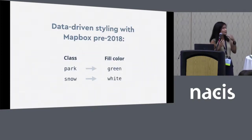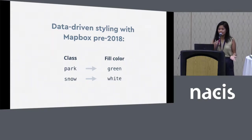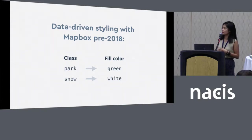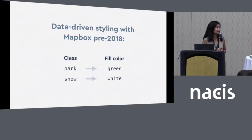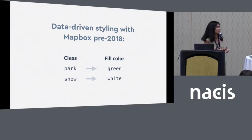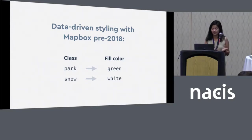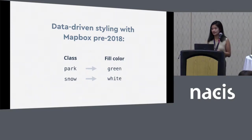This has been possible with Mapbox since 2016. That was when we introduced the first implementation of data-driven styling. The implementation goes something like this: for a style property — in this case fill color — you input a data field and output your desired value.